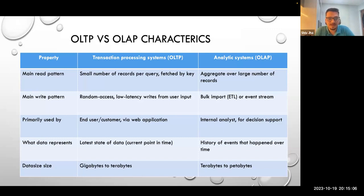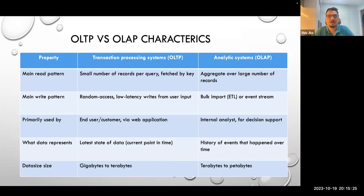If your main write pattern is random access with low-latency writes from user input, then you are looking to get through an index like a B-tree to reach the exact record — transactional relational databases are really good for that. If your writes are by nature bulk imports or even streams, then you are looking for OLAP databases.